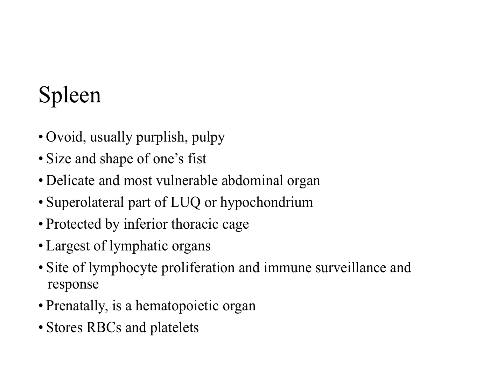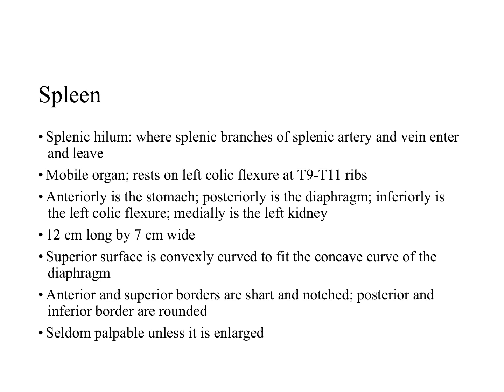The spleen is a soft, vascular mass with a relatively delicate capsule covered with a layer of visceral peritoneum that entirely surrounds the spleen, except at the splenic hilum where splenic branches of the splenic artery and vein enter and leave. The spleen is a mobile organ and although it normally doesn't descend inferior to the costal region, it rests on the left colic flexure. It's associated posteriorly with the 9th through 11th ribs, separated from those ribs by the diaphragm and the costodiaphragmatic recess.